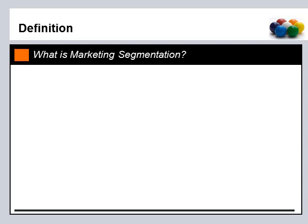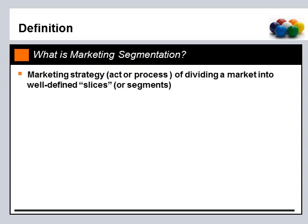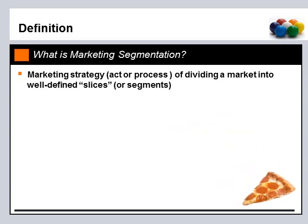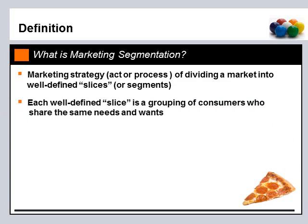Let's get started with a brief definition of what is marketing segmentation. I'm not a big fan of lengthy book definitions, so here it is in a very simple format. Marketing segmentation is a strategy or an act that a company takes to divide the market into well-defined slices or segments. When I think of slices, I think about pizza. Each well-defined slice is basically a grouping of consumers who share the same needs and wants.